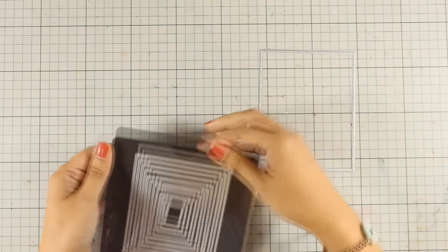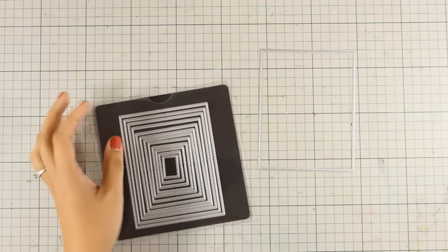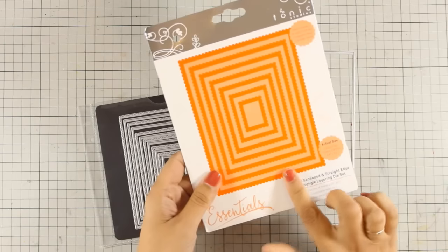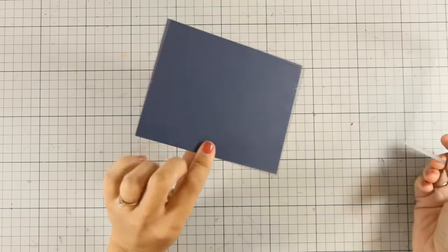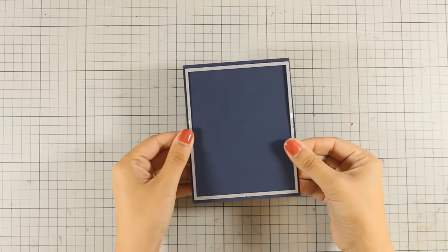Now I'm going to choose one of my rectangle dies and cut out a dark blue cardstock. As always, check the details down below in the description area and you will find there all the links to all the products that I am using today.